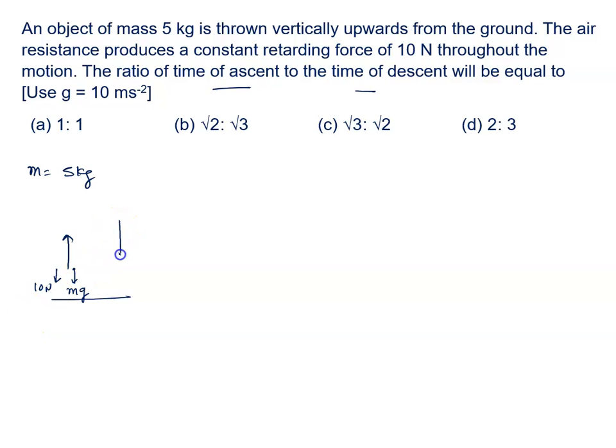But when this object is coming in the downward direction, weight Mg will still act in the downward direction. But this 10 Newton force will act in the opposite direction because it is retarding force which is opposite to the motion of the body.